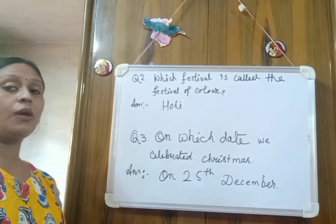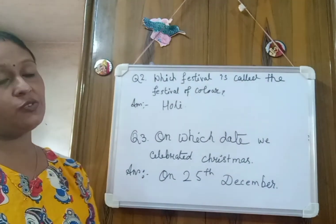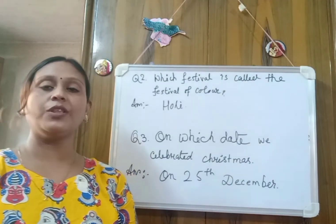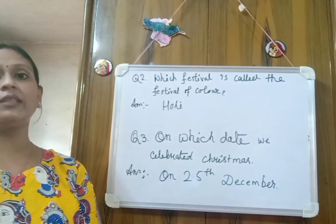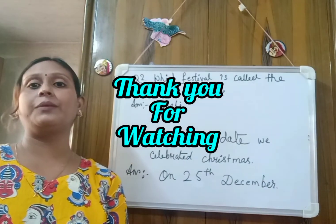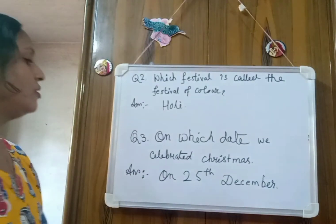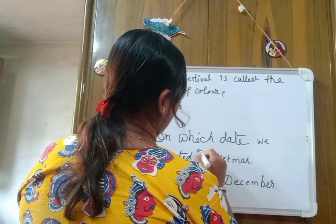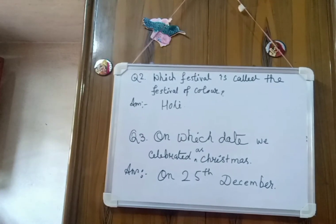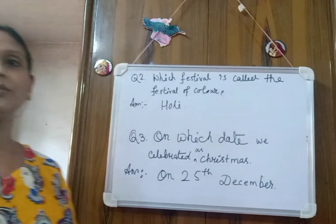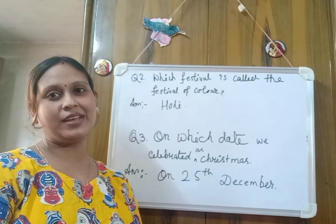So children, today you have learned three questions on festival. First one: which festival is called the festival of light? That is Diwali. Second one: which festival is called the festival of colour? That is Holi. And last one: on which date do we celebrate Christmas? On 25th December. No more for today. I hope you have understood. Thank you for watching this video. Have a nice day, children. Bye-bye.